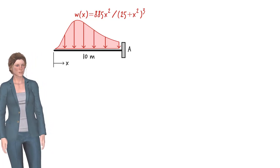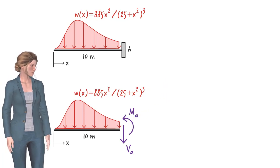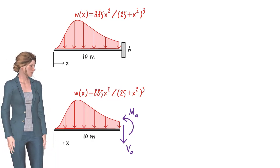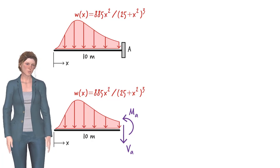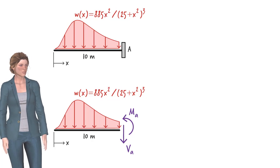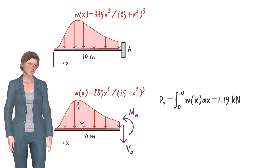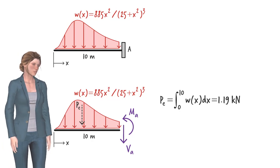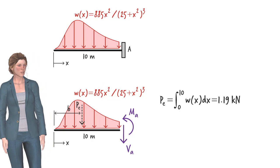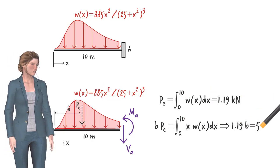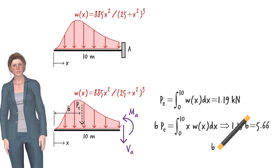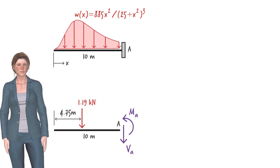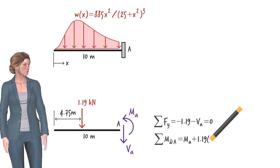Suppose we wish to determine the maximum shear force and bending moment in the beam, which occur at the fixed support. We cut the beam very close to the support and draw its free body diagram. In order to write the equilibrium equations, we need to replace the distributed load with its equivalent concentrated load. Given the nonlinear nature of the load, we have no choice but to integrate the function in order to determine the total load. We also need to use integration to determine the geometric center of the load. Denoting the distance from the left end of the beam to the center of the load as B, we can write and solve the equation for B. So we can replace the distributed load with its equivalent concentrated load and write the equilibrium equations to solve for the unknown shear and moment.